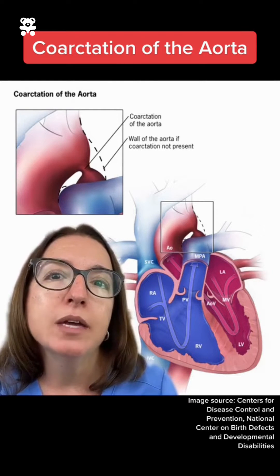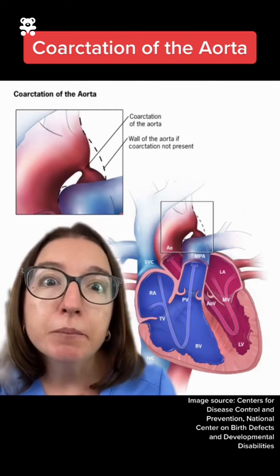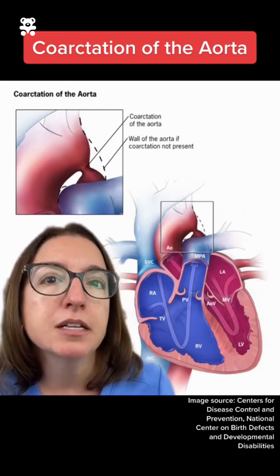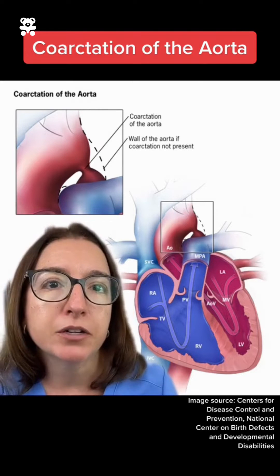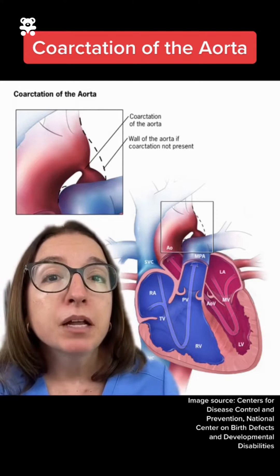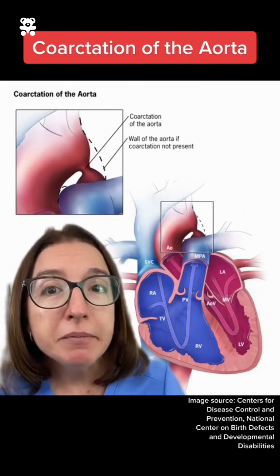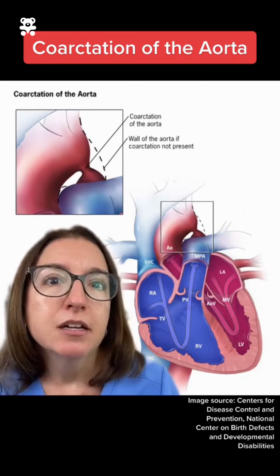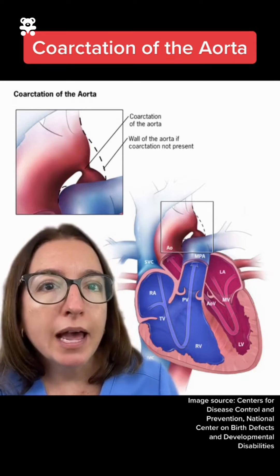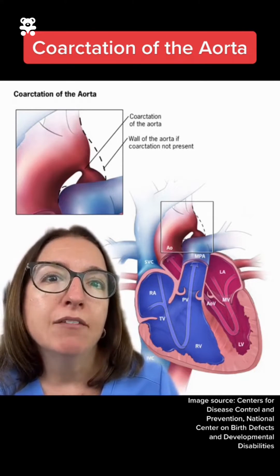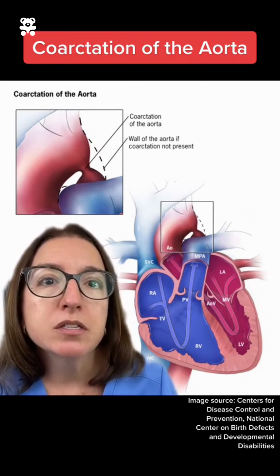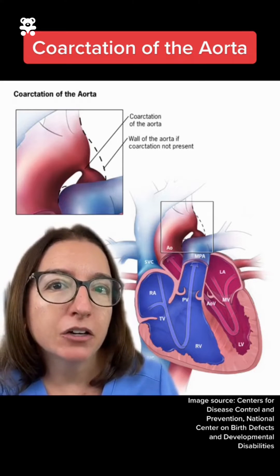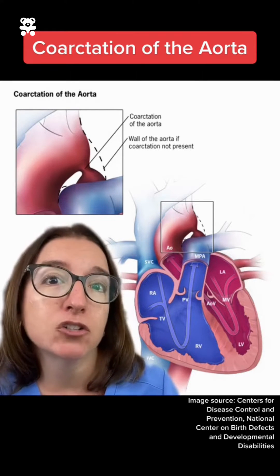And this is why we have hypertension and bounding pulses in the upper extremities. However, blood flow is limited to the lower extremities. So with COA, we will have weak pulses, cool skin, and pallor in the lower extremities.